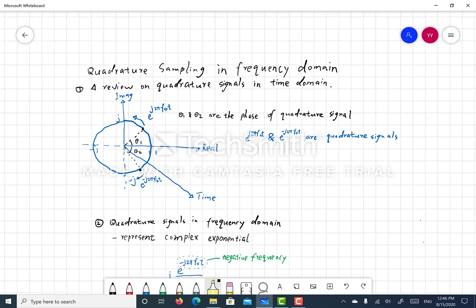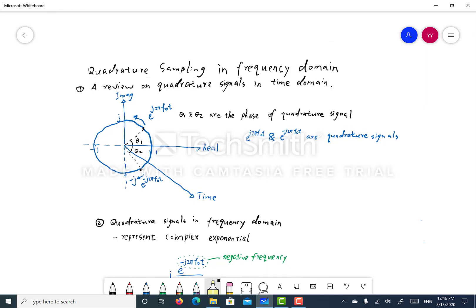In the time domain, a complex phasor can be plotted in a three-dimensional space with time, real, and imaginary axis. So we know that phi1 and phi2 are the angle of the two quadrature signals.